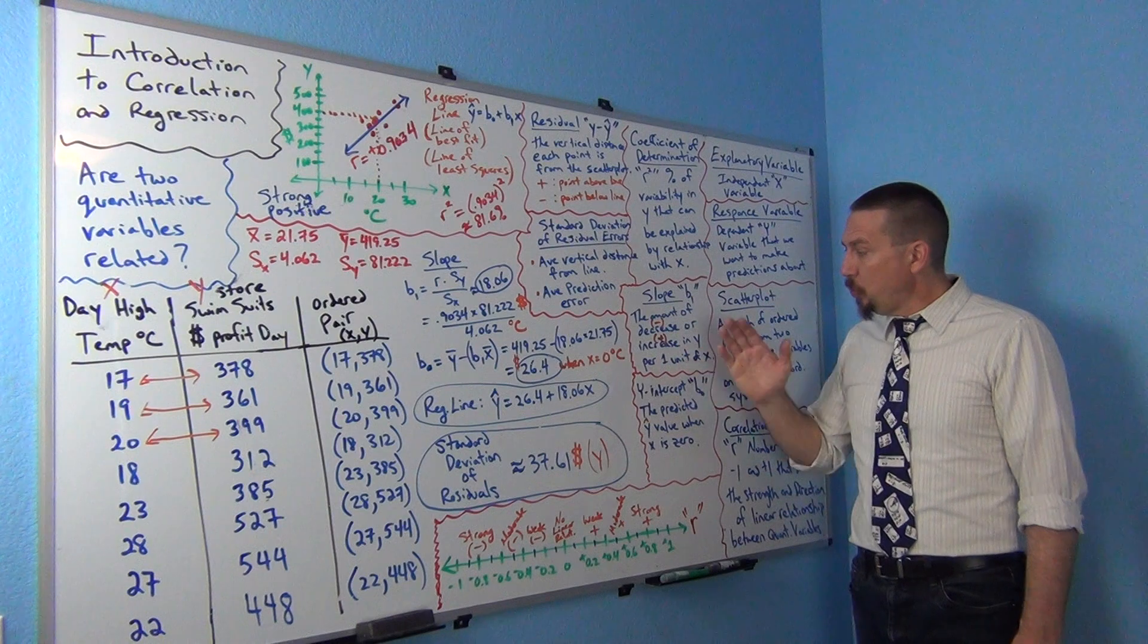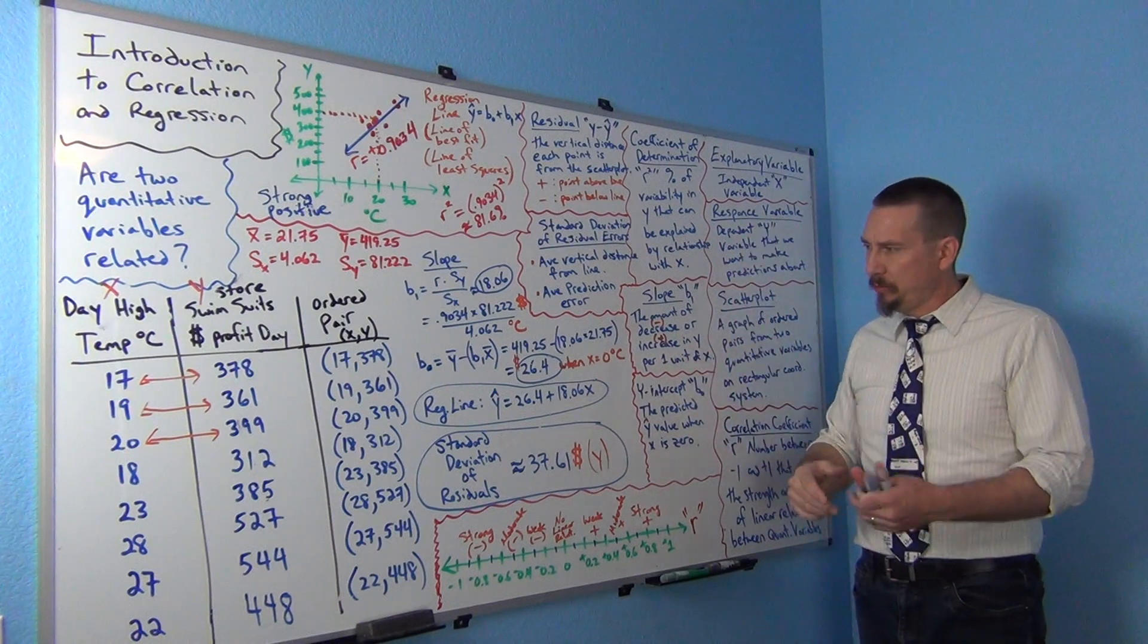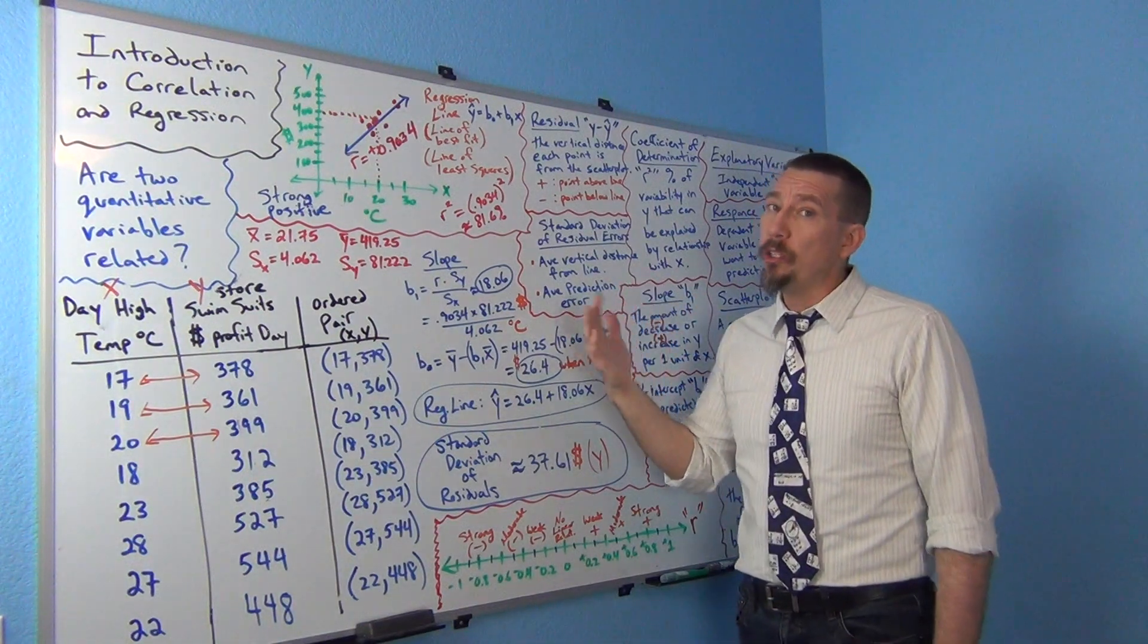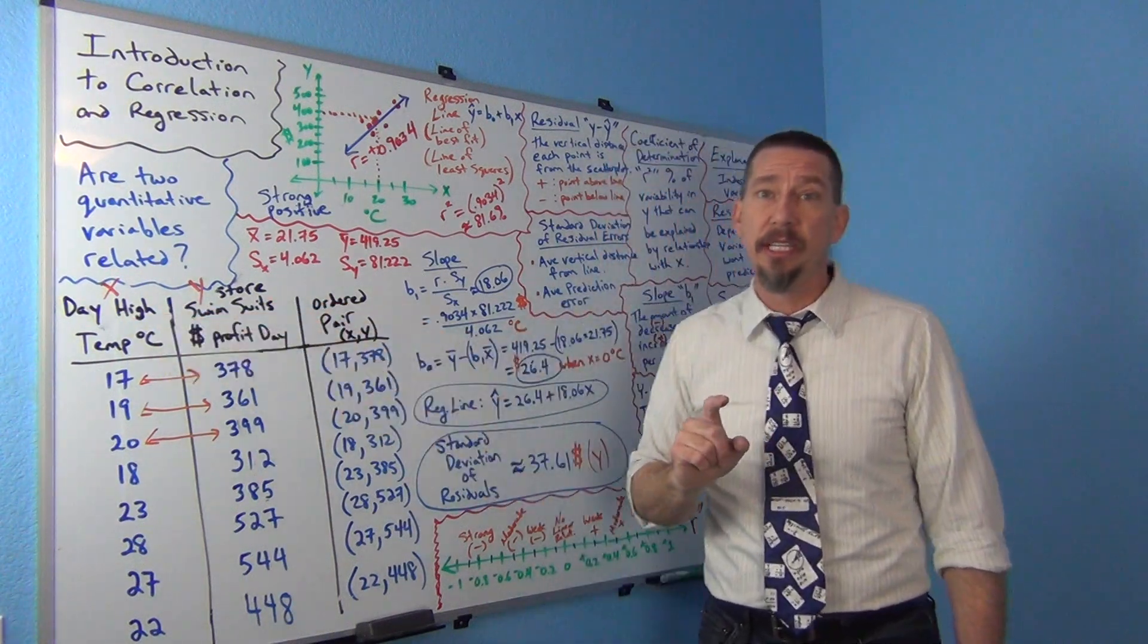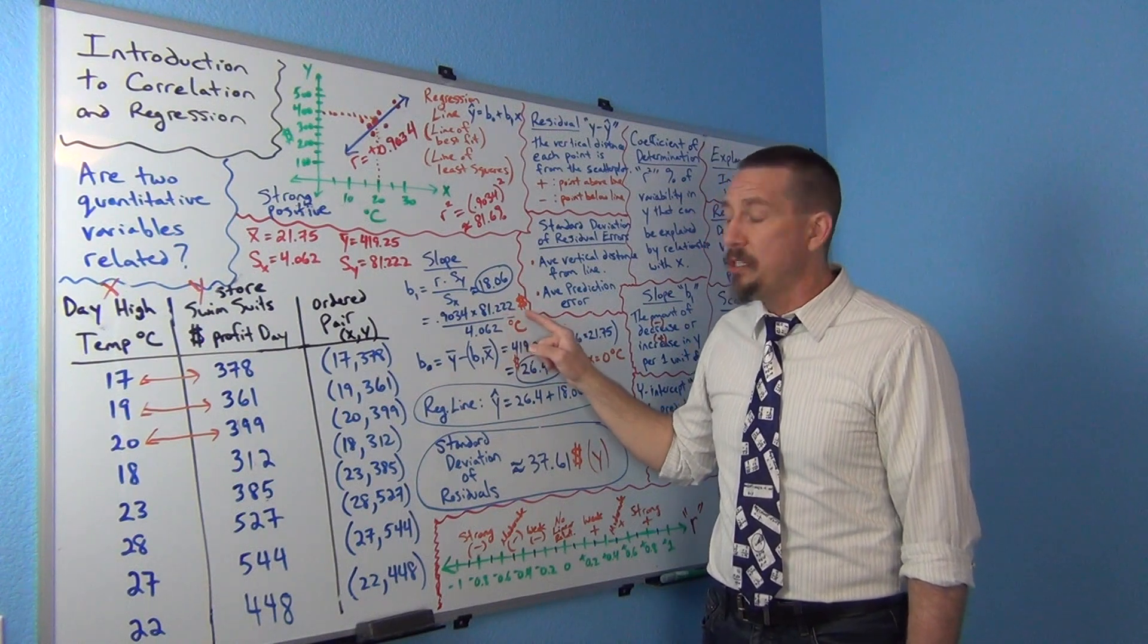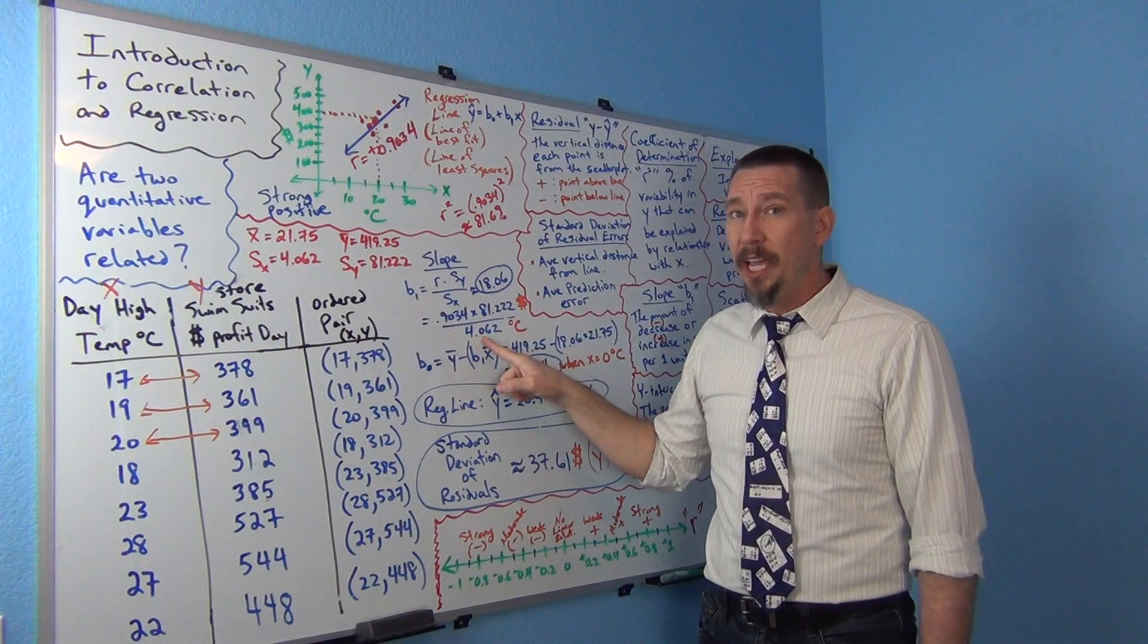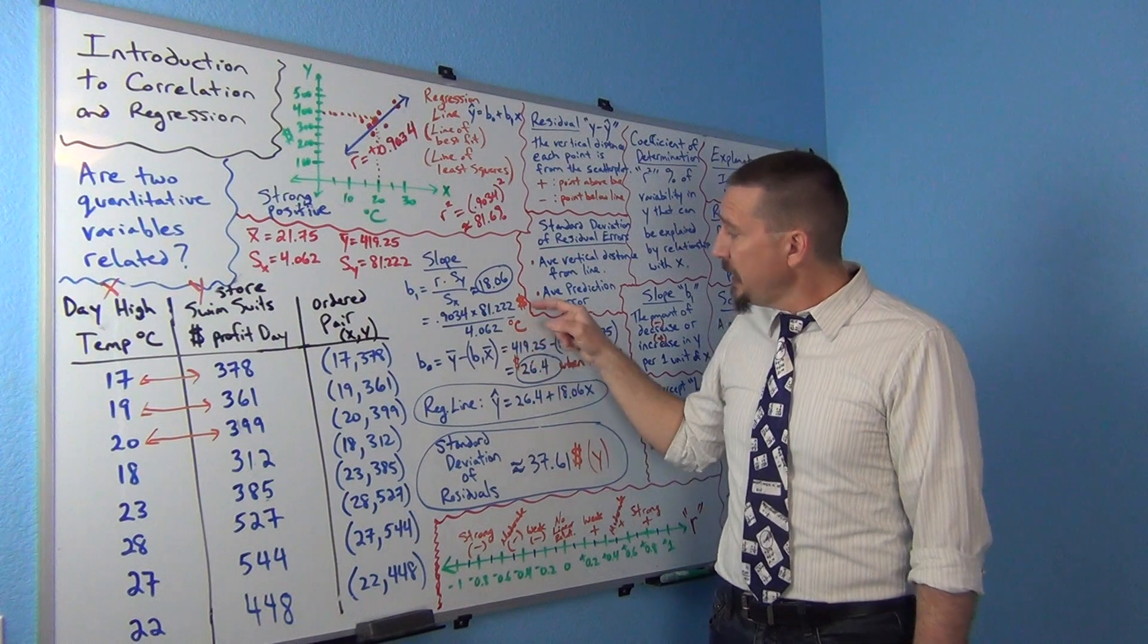And think of it as one, if x goes up one unit, how much does y go up or down? So let's kind of think about this for a second. Again, slope is often called a rate of change. It has both units involved. It's going to have dollars and degrees Celsius in the explanation. Remember this 81.222, the standard deviation of the y's? Well, that was dollars. And this 4.062 was the standard deviation of the x's? Well, that's degrees Celsius.